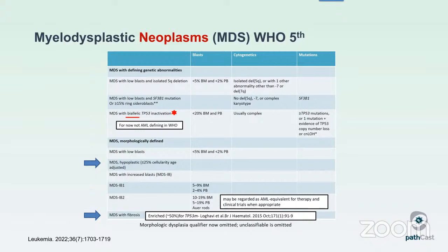If you have more than 10% blasts in the peripheral blood or bone marrow, the ICC regards that as MDS slash AML. While the WHO does not recognize that as a distinct category, they do advise that cases with more than 10% blasts may be recorded as AML equivalent for therapy and clinical trial enrollment purposes when deemed appropriate by the treating physician. MDS with fibrosis cases have increased blasts and moderate to severe fibrosis. Biallelic TP53 inactivation trumps MDS with fibrosis in the classification hierarchy.